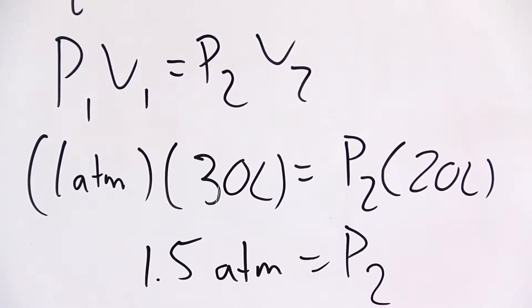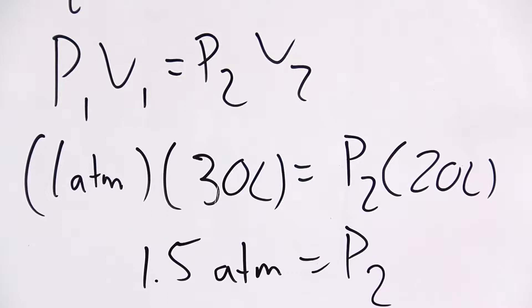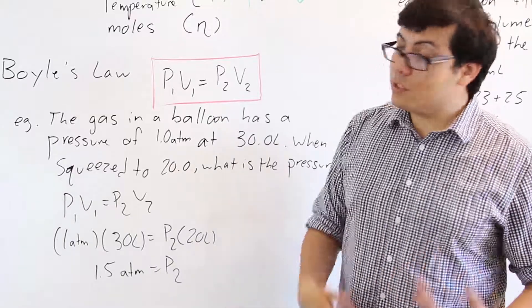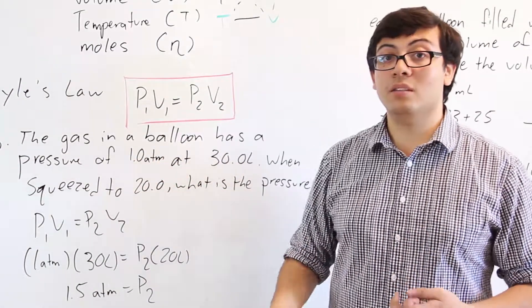So P₁V₁ equals P₂V₂ is our equation. We just plug it in, and after we do the work, we get 1.5 atmospheres of pressure. We'll get into the units of pressure later. Just know that right now, atmospheres is one of the ways that you can denote pressure.